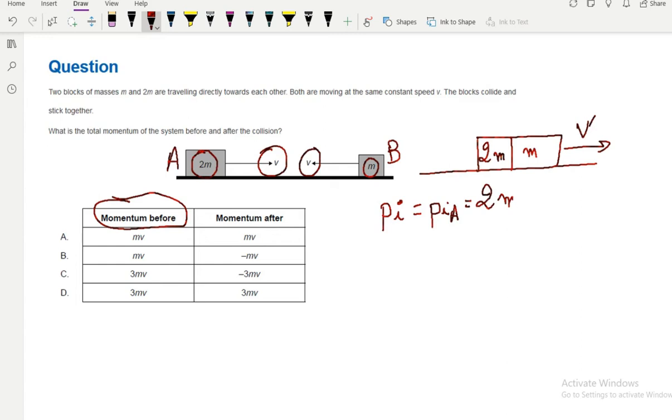I'm gonna choose right as the positive direction. The momentum of block B is P initial B which is mass M times negative V. Now I'll add the momentum together, so you have 2M times V minus M times V, which equals M times V. This is P total initial.